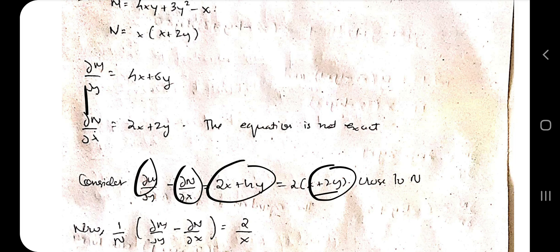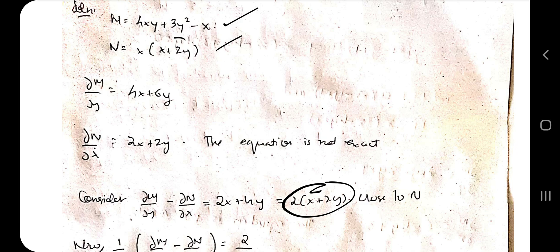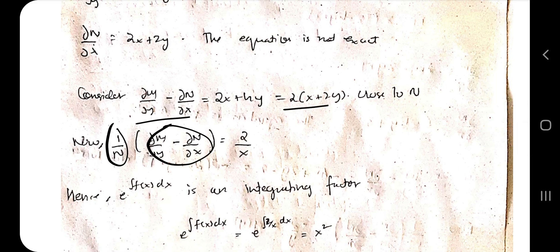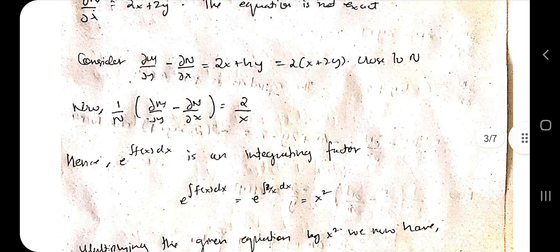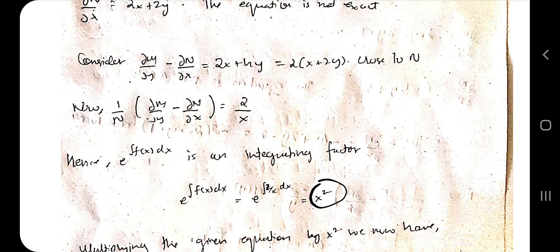After the subtraction, compare the result with M and N to see which is closer. If it is closer to N, divide the subtraction result by N to get one answer — this is the integrating factor formula. Take that result and raise e to the power of its integral. For example, integrating 2 by x dx gives a log term, which simplifies to x-squared as the integrating factor.